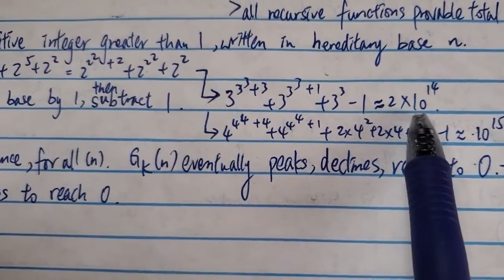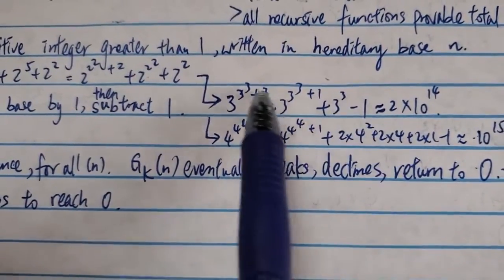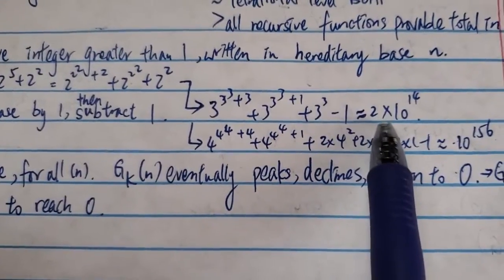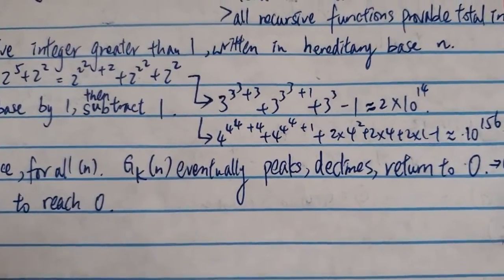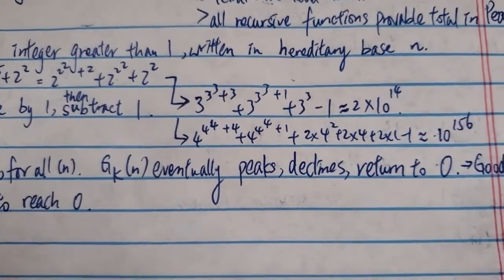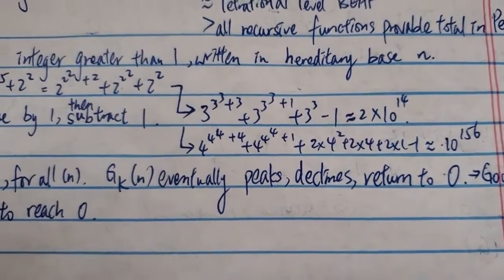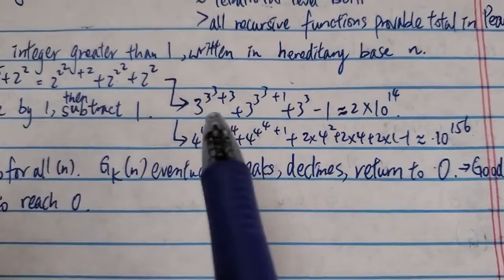Therefore, the number at the end, this thing, it's around 2 times 10 to the power of 14. So it's already very big in the second step. So this is just a very brief example to show how quickly this sequence grows.